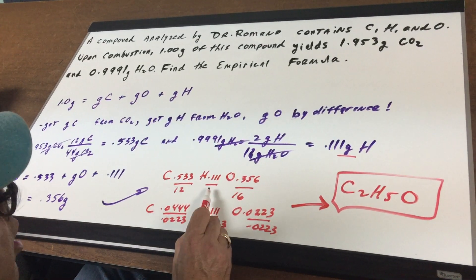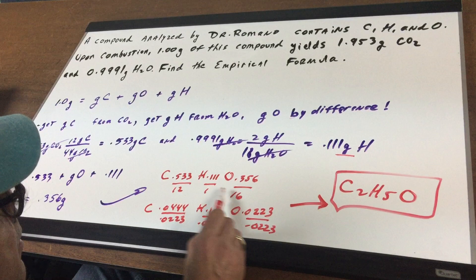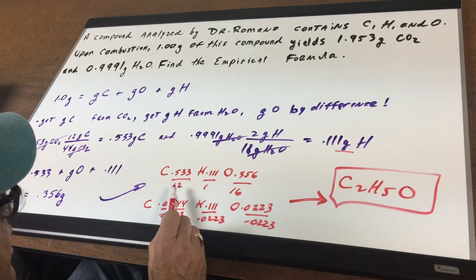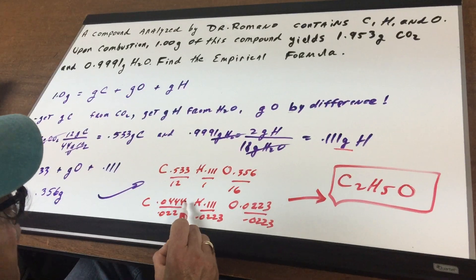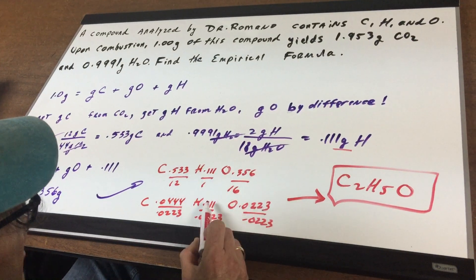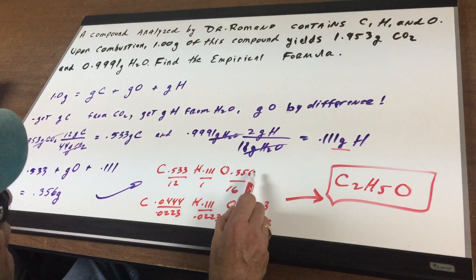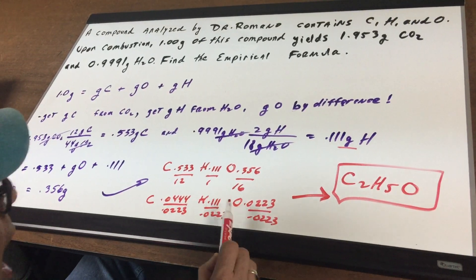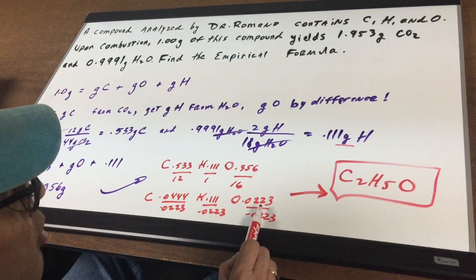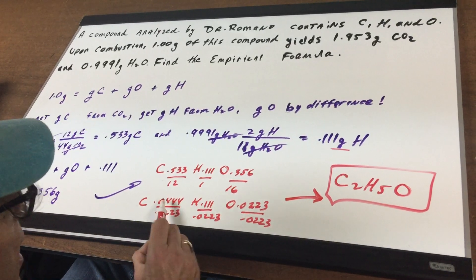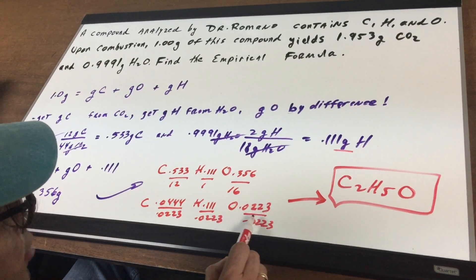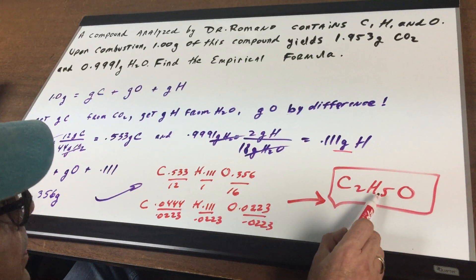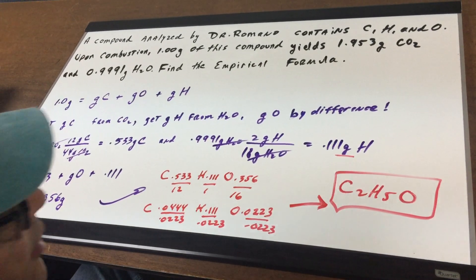I'm going to divide all the grams by their atomic weights. 0.533 over 12 is 0.0444. 0.111 over 1 is 0.111. 0.356 over 16 is 0.0223. I then divide by the lowest number, which is 0.0223. Dividing gives you 2 carbons, 5 hydrogens, and 1 oxygen.